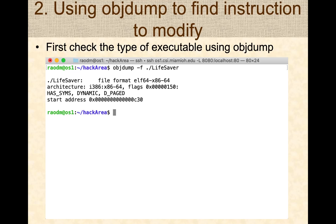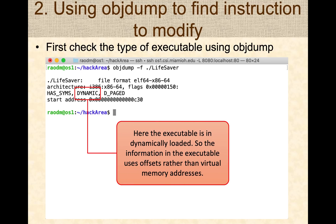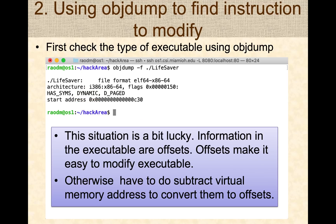The next important thing is to look at the type of the executable. Here I see it's a proper Linux executable, and one important detail is that it's a dynamically loaded executable. So the information we're going to use will be offsets in the file rather than raw virtual memory addresses, which actually makes our life easier. Even with another executable type, you would just need to subtract the virtual memory addresses to convert them to offsets.